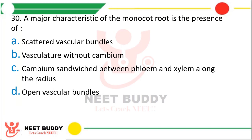Question 30: A major characteristic of monocot root is presence of scattered vascular bundles, vasculature without cambium, cambium sandwiched between phloem and xylem along the radius, or open vascular bundles. The correct answer is option B, vasculature without cambium.